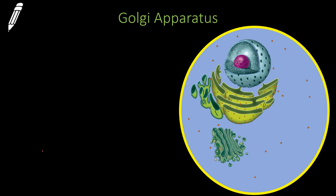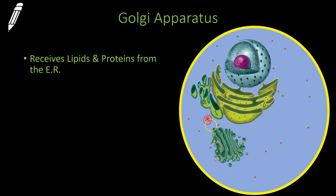So the Golgi apparatus — it looks like flat stacks. What the Golgi apparatus does is it receives proteins and lipids from the ER. Let's say there's a protein that's made from the rough ER — it's going to go to the Golgi apparatus. What the Golgi apparatus is going to do is modify the protein, add the final touches to it, and put a tag on there. That tag basically says this protein needs to go to this specific location — kind of like a mailing address for where that protein needs to go.